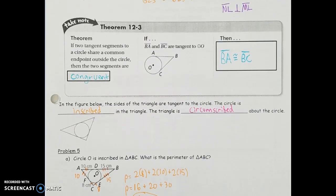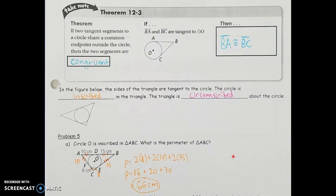Circle O is inscribed in triangle ABC, and we need to find the perimeter of triangle ABC. Using the congruent tangent segments theorem: AD and AF are both tangent from point A, so AF = 10. FC = 8, so EC = 8. DB = 15, so EB = 15. Adding everything in pairs: 2(10) + 2(8) + 2(15) = 20 + 16 + 30 = 66 centimeters for the perimeter.